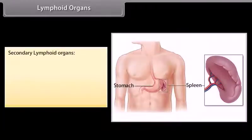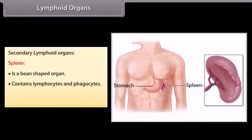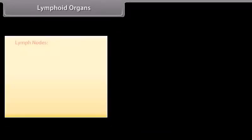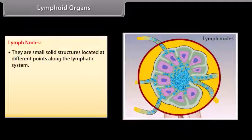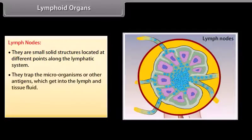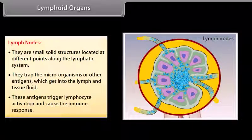The spleen is a bean-shaped organ containing lymphocytes and phagocytes that acts as a filter of the blood by trapping blood-borne micro-organisms. Lymph nodes are small solid structures located at different points along the lymphatic system. They trap micro-organisms or other antigens that enter the lymph and tissue fluid, triggering lymphocyte activation and causing the immune response.